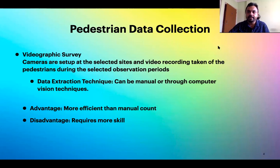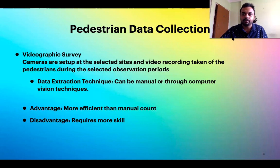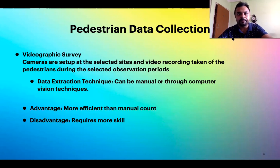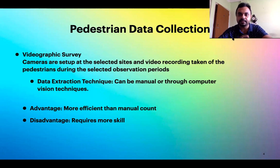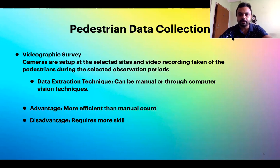There are various ways of collecting data for pedestrians. When going for research or constructing pedestrian facilities, you need certain data before planning — before deciding the width of a footpath, whether a footpath is required, whether a zebra crossing is needed, whether signalization is required, whether an underpass or overbridge is required for pedestrians to cross the road. Constructing such infrastructure requires a huge investment, so we need pedestrian data to justify those decisions.